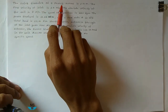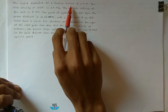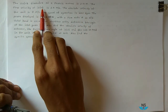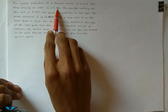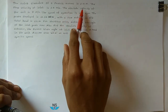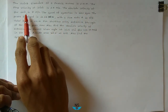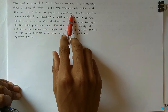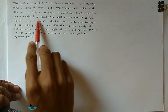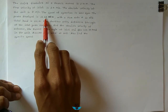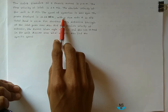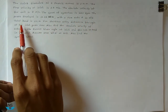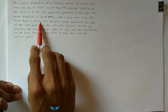The Outer Diameter of a Francis Runner is 1.4 meter. The Flow Velocity at Inlet is 9.5 meter per second. The Absolute Velocity at the Exit is 7 meter per second. The Speed of Operation is 430 RPM. The Power Developed is 12.25 MW with a Flow Rate of 12 meter cube per second. Total Head is 115 meter.